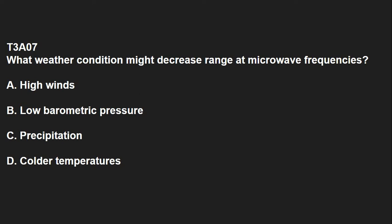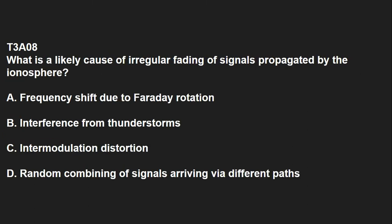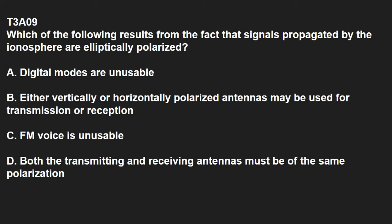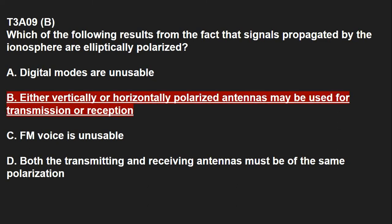T3A07: What weather condition might decrease range of microwave frequencies? That is precipitation. T3A08: What is the likely cause of irregular fading of signals propagated by the ionosphere? That is random combining of signals arriving via different paths. T3A09: Which of the following results from the fact that signals propagated by the ionosphere are elliptically polarized? Either vertically or horizontally polarized antennas may be used for transmission or reception.